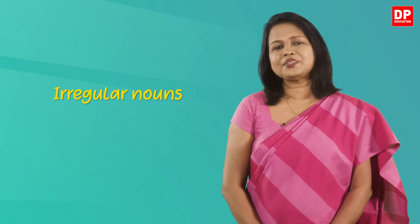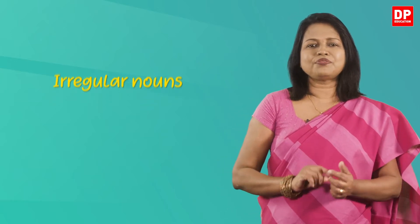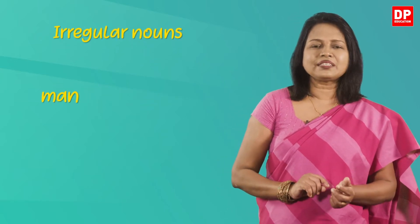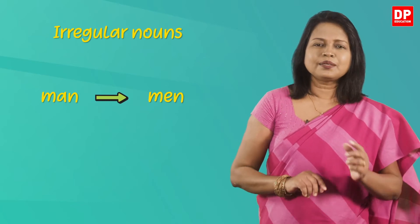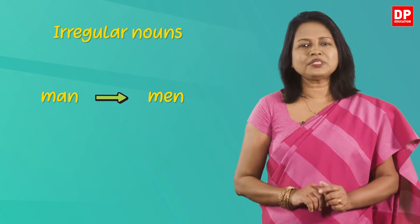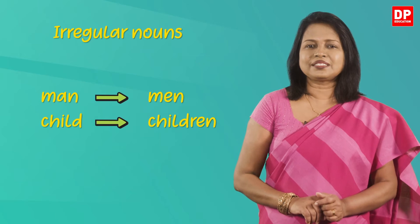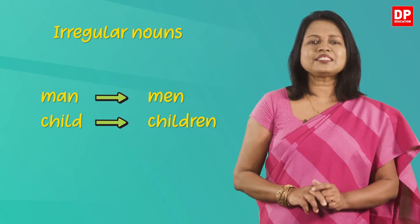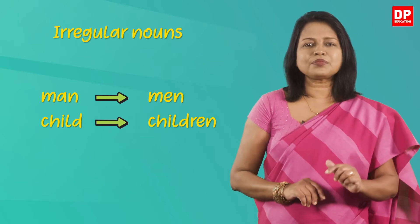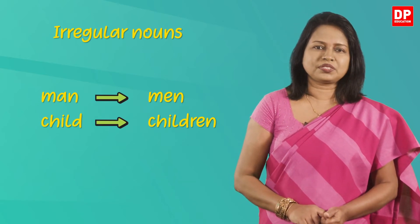You are already familiar with many of these. For example, the plural form of man is men, not mans. The plural form of child is children, not childs. In this lesson, let's discuss how some of the common irregular plurals are formed.